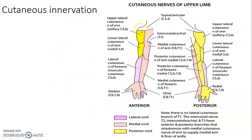Regarding cutaneous innervation, on the lateral aspect, you have the upper lateral cutaneous innervation of the arm from the axillary nerve — that is the C5 dermatome. The lower lateral cutaneous nerve is by the radial. On the forearm, the lateral cutaneous is by the musculocutaneous nerve. On the hand, the lateral 3½ digits on the palmar surface are innervated by the median nerve, and the medial 1½ by the ulnar nerve.